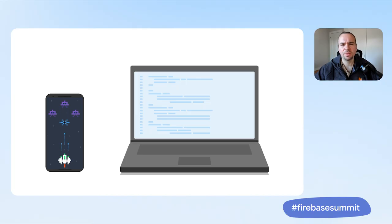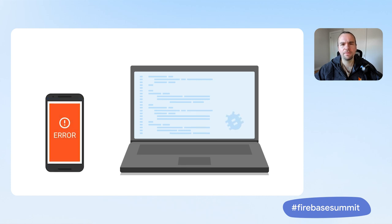Games are some of the most sophisticated pieces of mobile software, and a lot of times they run into issues that are very challenging to debug — issues like memory corruption, absent GPU features, or unexpected screen resolutions. Crashlytics has released a number of features that aim to help your game reach its full stability potential.